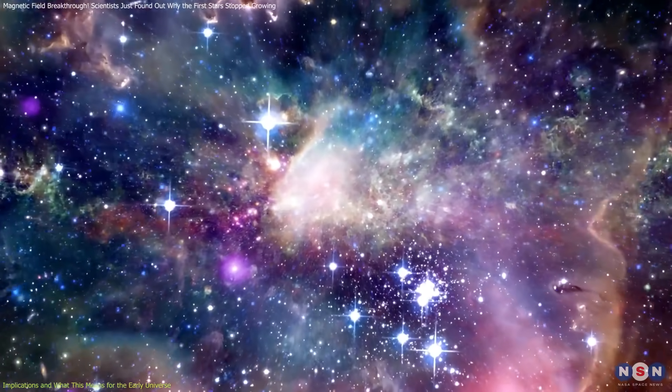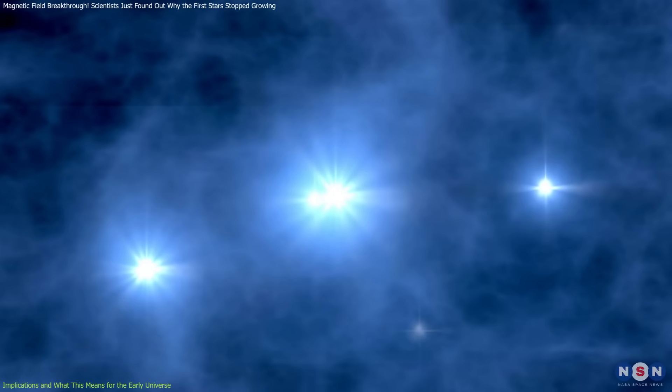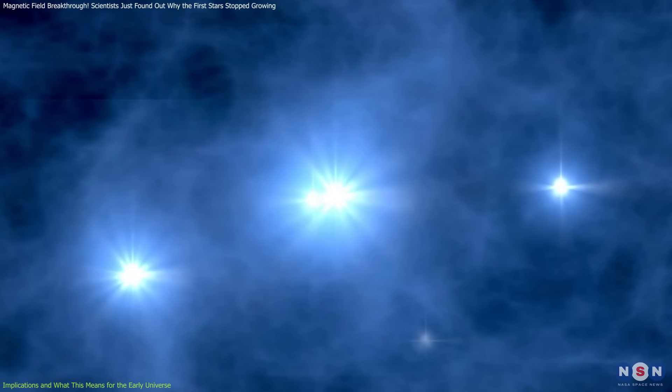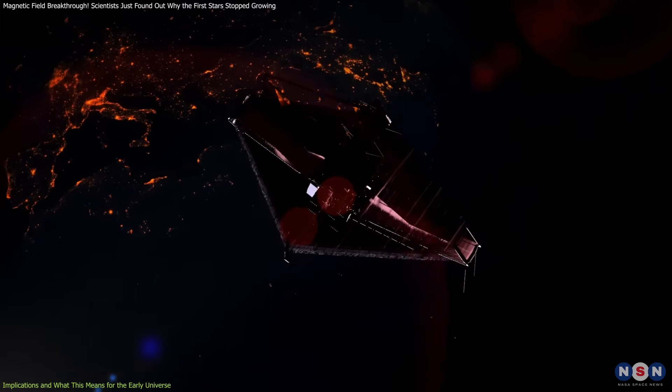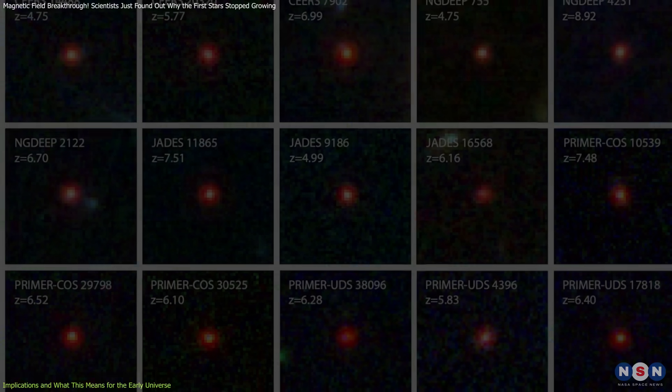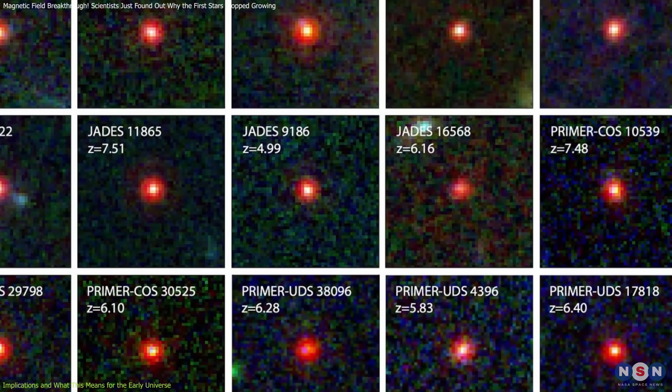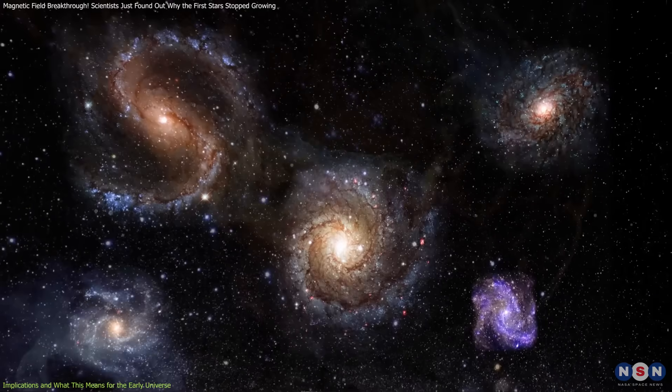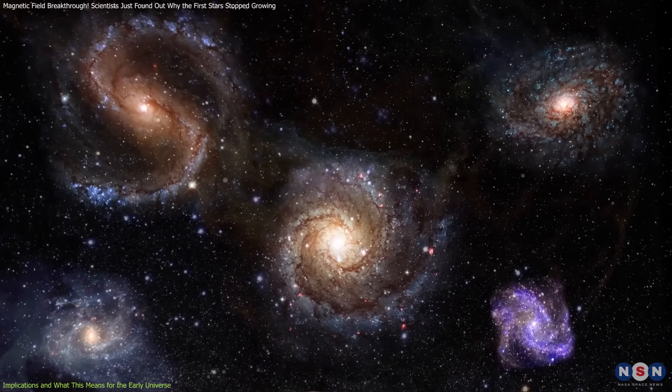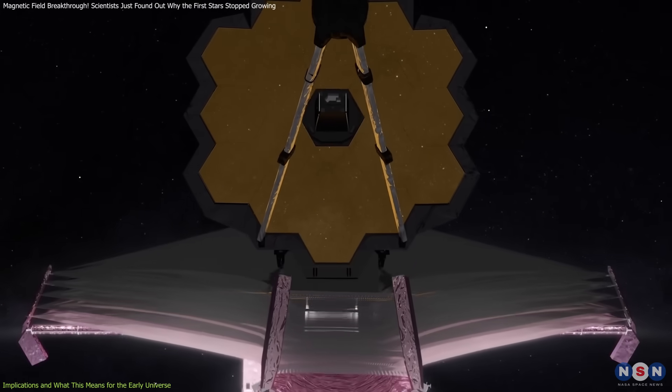Additionally, these findings influence our search for Population III stars today. While no confirmed Pop III stars have been observed, astronomers are looking for indirect evidence using the James Webb Space Telescope. Webb has already spotted ancient galaxies that appear much brighter and hotter than expected, suggesting they may be powered by high-mass Population III stars. If future observations confirm this, it could finally provide direct proof of these long-theorized stars.